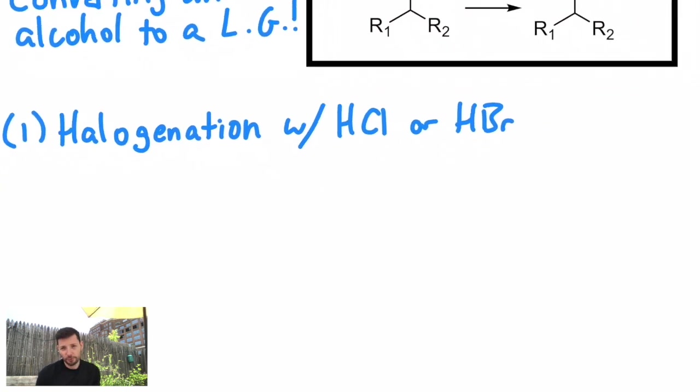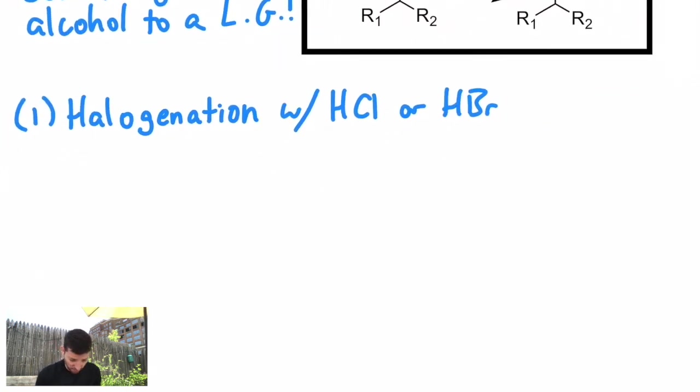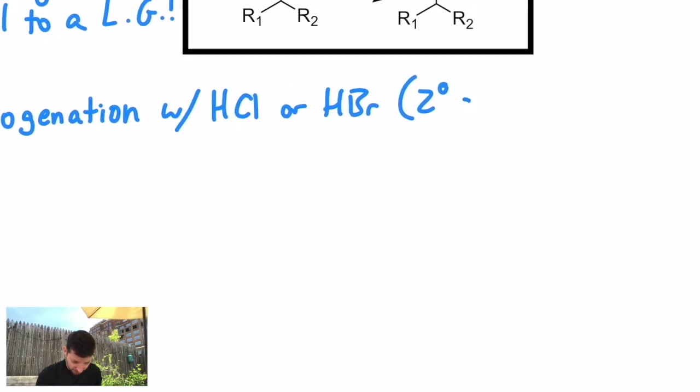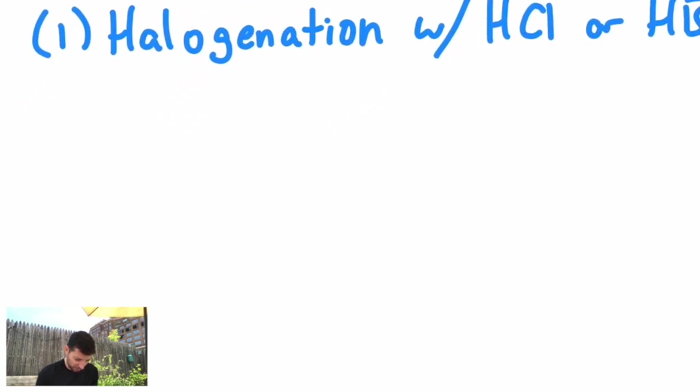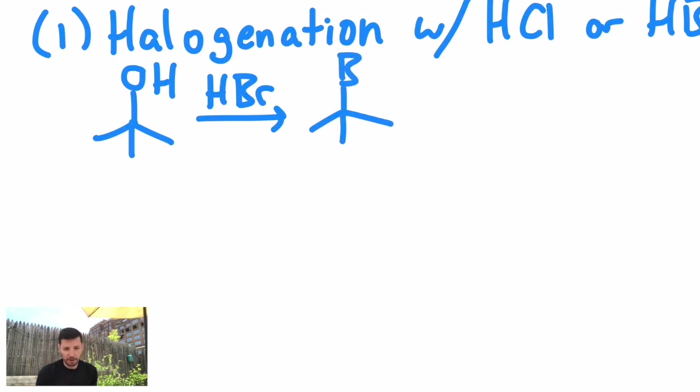This is general for tertiary and secondary alcohols. It's going to depend on what type of alcohol we have, secondary or tertiary alcohols. And the reaction looks like this. If you have, let's say, a tertiary alcohol, and I treat it with just HBr, the haloacid, you substitute the alcohol for a halogen, in this case a bromine. And I'm set up to do an E2 reaction or something like that.